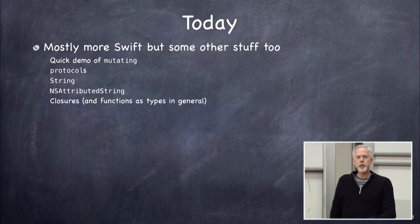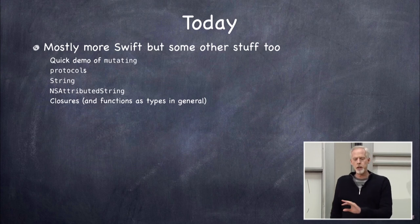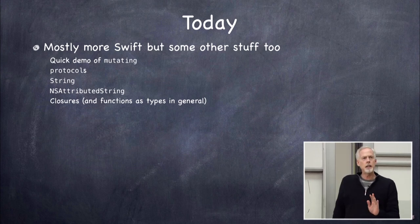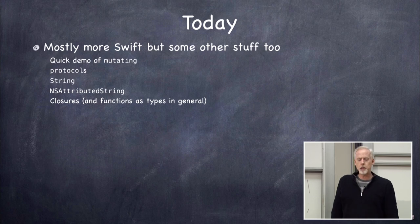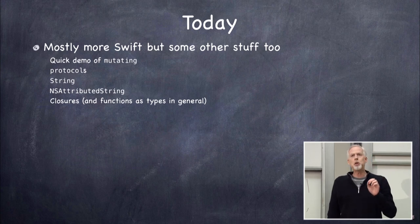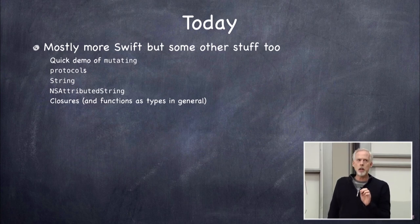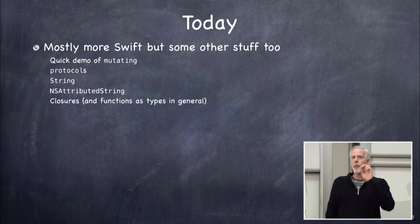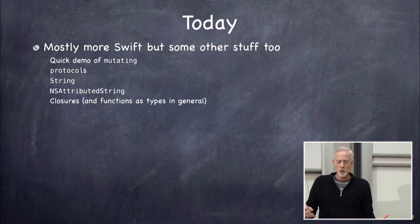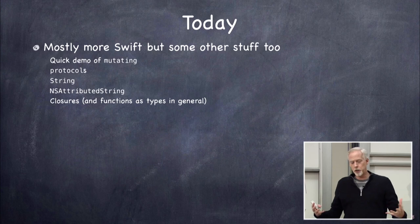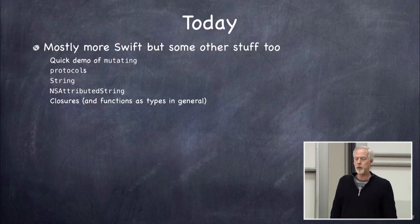I'm going to do a quick demo that I postponed from Wednesday of this mutating keyword that we have to add when we make something a struct versus a class. Then we're going to talk about two very important topics today: protocols and closures, functions as types in general. And in between I'm going to talk about string, which is not as monumentally important as protocols and closures.